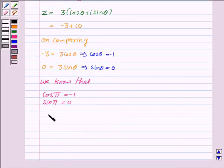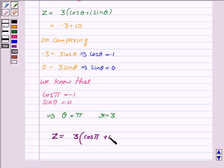This implies θ = π, and the value of r was 3. Hence, z in polar form is given by 3(cos π + i sin π).